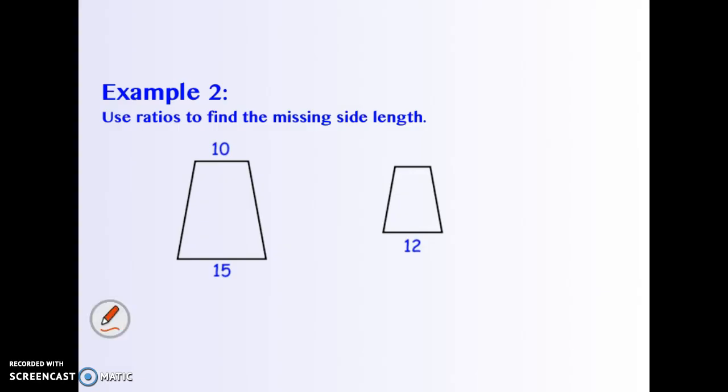So we can do a ratio of the missing side lengths. If I do top to bottom in this one, it's 10 to 15, and this bottom one, something to 12. I'll call it X over 12.